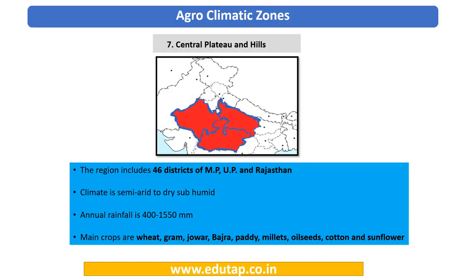The seventh agro-climatic zone is the Central Plateau and Hills, covering parts of Rajasthan, UP and Madhya Pradesh. The climate is usually arid and rainfall ranges from 400 to 1500 mm. Since this is a dry area, the main crops are jowar, bajra and millets. Paddy is grown when irrigation is provided. Oilseeds, cotton, sunflower, wheat and gram are also important crops in this zone.